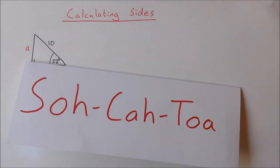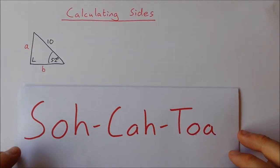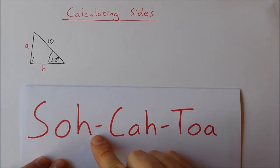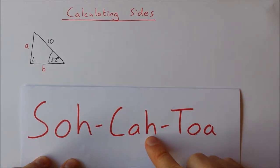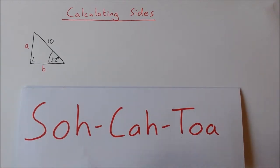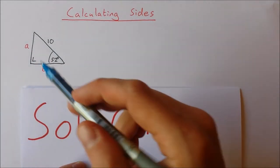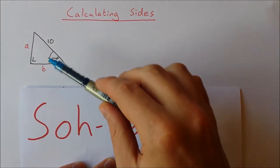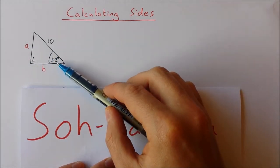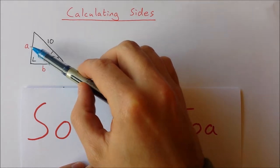Sine is opposite over hypotenuse, cosine is adjacent over hypotenuse, tan is opposite over adjacent. If I want to calculate 'a', I have this angle here, 52 degrees. 52 degrees is opposite to 'a', so 'a' is the opposite side. I have the side 10, that's the hypotenuse.